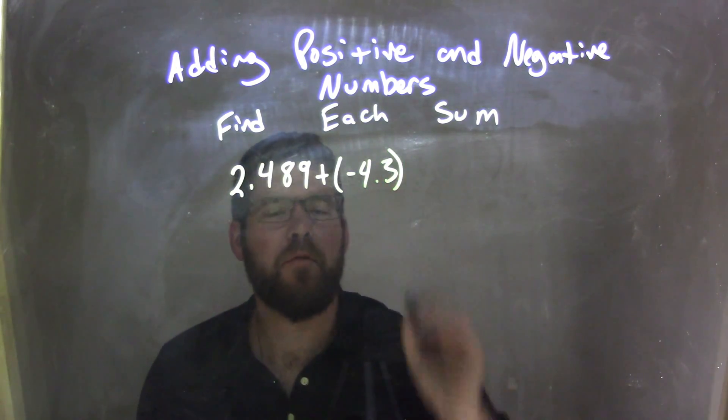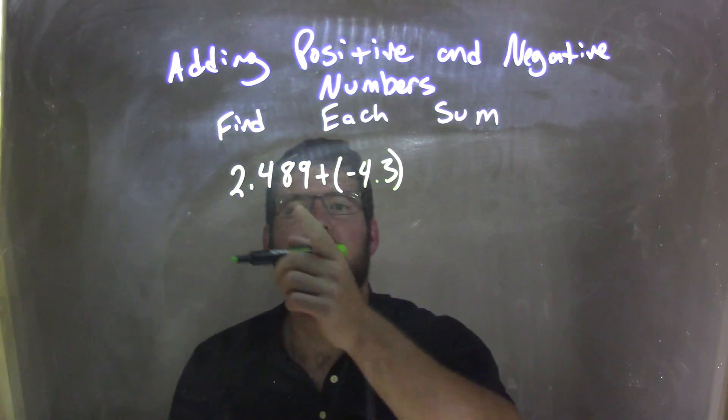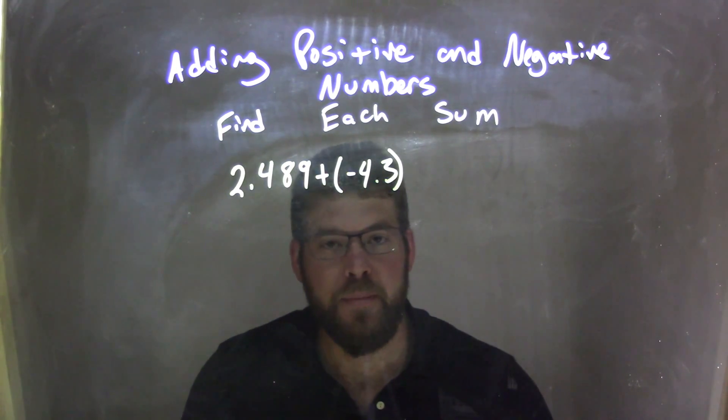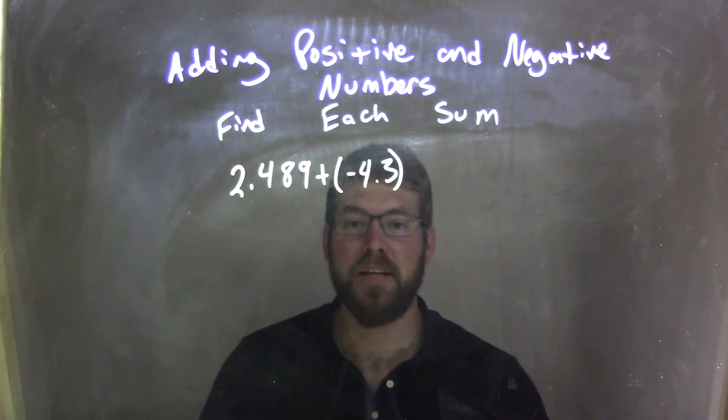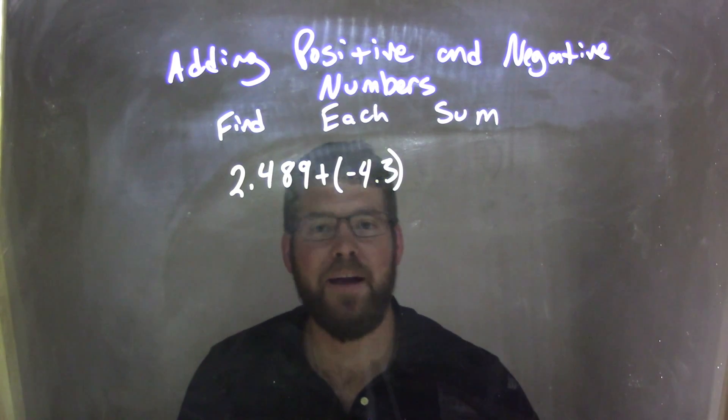Well, the first thing I think about is: is my final answer going to be positive or negative? In this case, it's going to be negative. Negative 4.3 has more weight than positive 2.489.